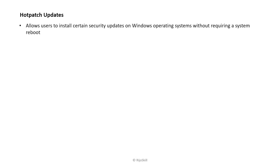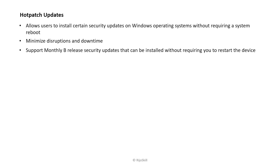What is a hot patch update? It allows users to install certain security updates on the Windows operating system without requiring a system reboot. The user can install the update without needing to restart, which minimizes disruption and downtime. These are monthly security updates released by Microsoft that can be installed without restarting the device.